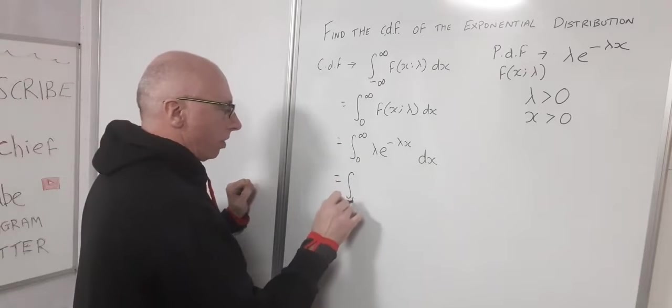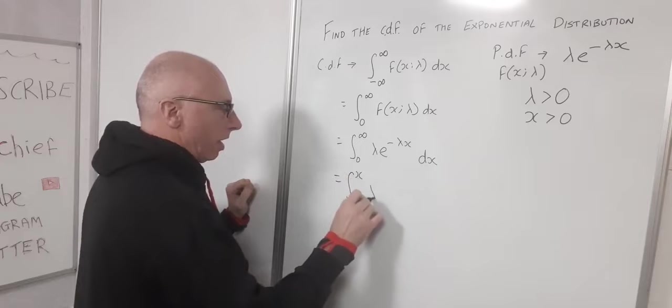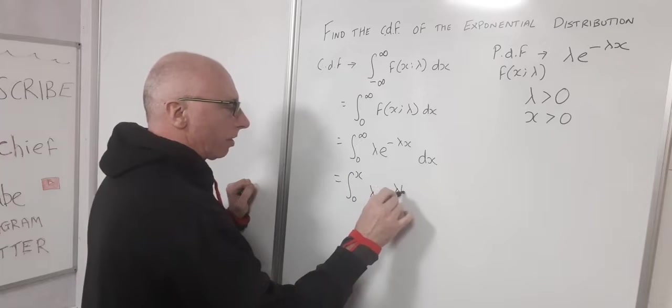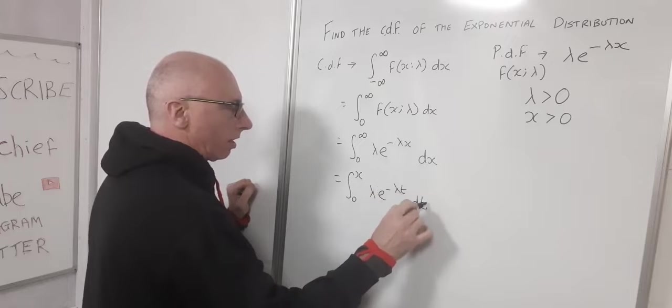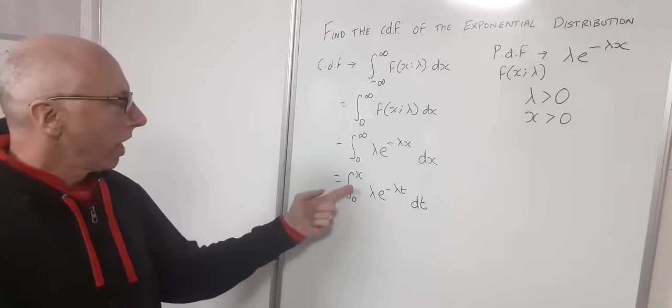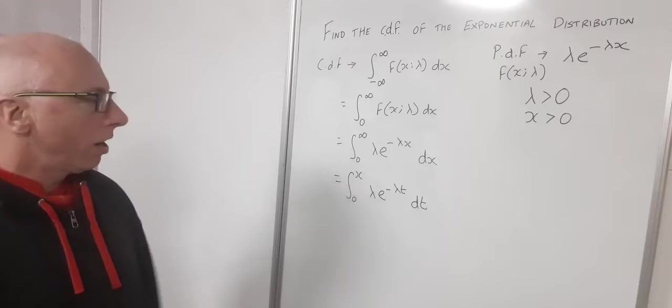So now we go from zero to x lambda e to the negative lambda t dt. That way then we integrate it over the range and then we get our x when we do our integration.